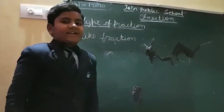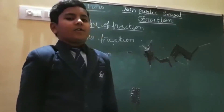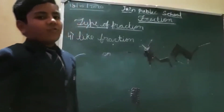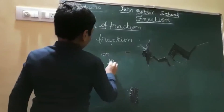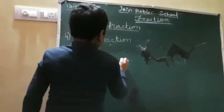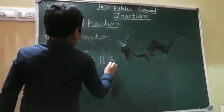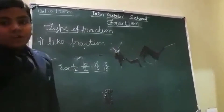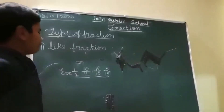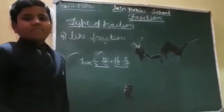Like fraction — a fraction in which the denominators are the same as each other is called a like fraction. For example, 1 by 2 and 10 by 2, or 18 by 15 and 5 by 15. The denominators are the same, so they are called like fractions. In the numerator you can take any number.